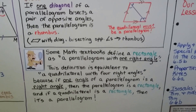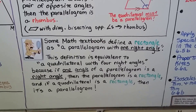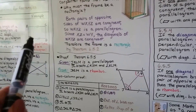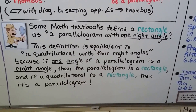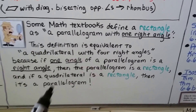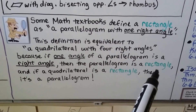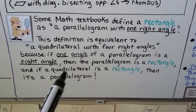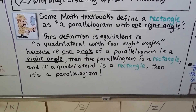Some math textbooks define a rectangle as a parallelogram with one right angle — that sounds like our first theorem. This definition is equivalent to a quadrilateral with four right angles, because if one angle of a parallelogram is a right angle, then the parallelogram is a rectangle. And if a quadrilateral is a rectangle, then it's a parallelogram.